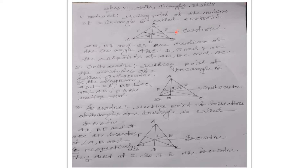But what is a median? Median means: if you draw a line segment from the vertex to the midpoint of the opposite side — AB is the opposite side of vertex C, and D is the midpoint. If you join CD, then CD will be a median because D is the midpoint of AB. Similarly, E is the midpoint of BC, so AE will be a median, and BF will also be a median because F is the midpoint of AC.